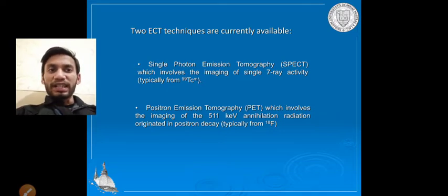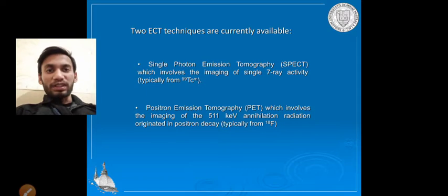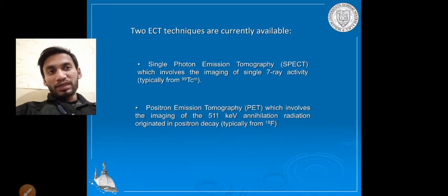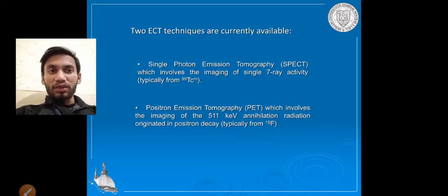In SPECT, we use the radioactive compound technetium-99m in macroaggregated form. This radioactive compound shows attachment to cells and leads to its appearance in the image.